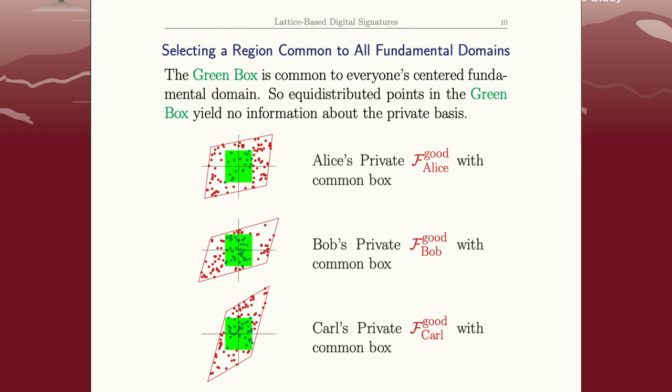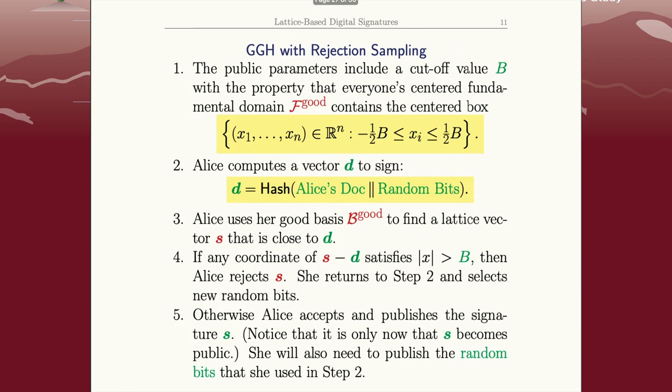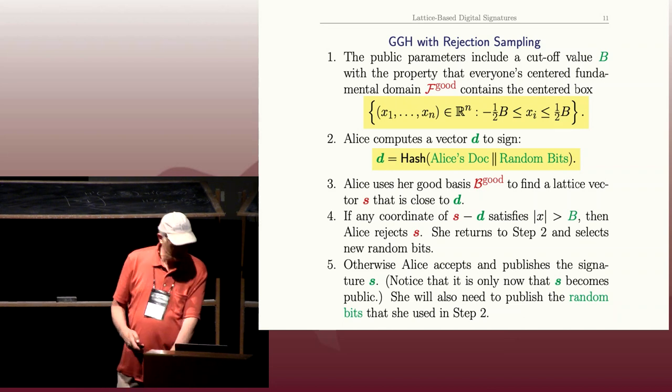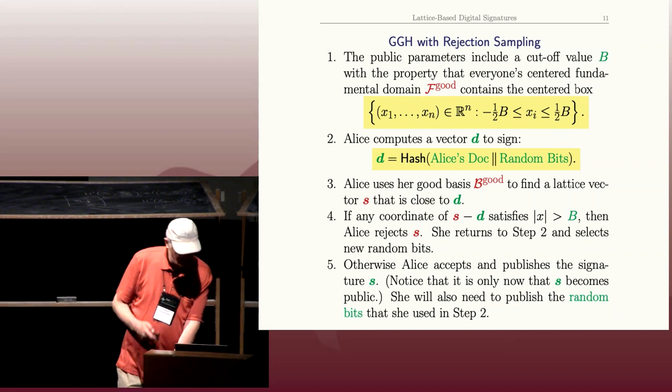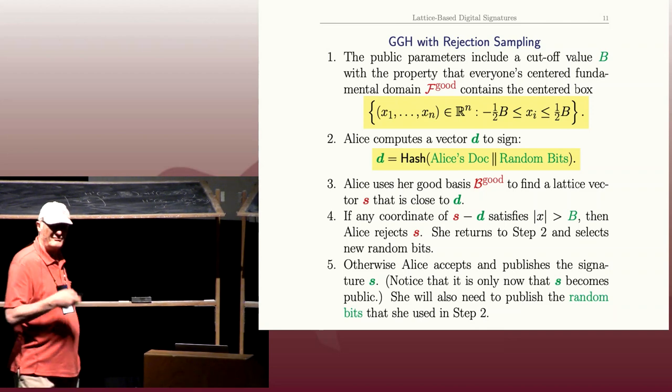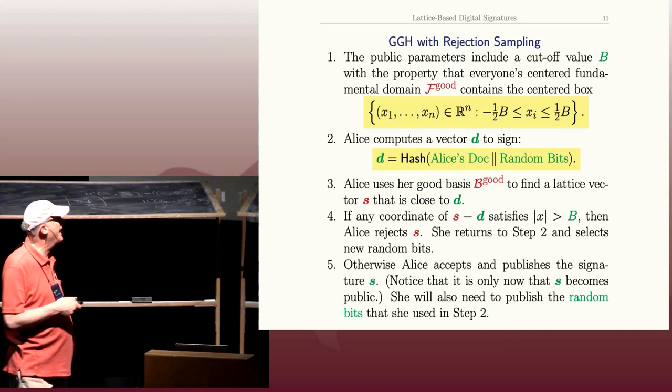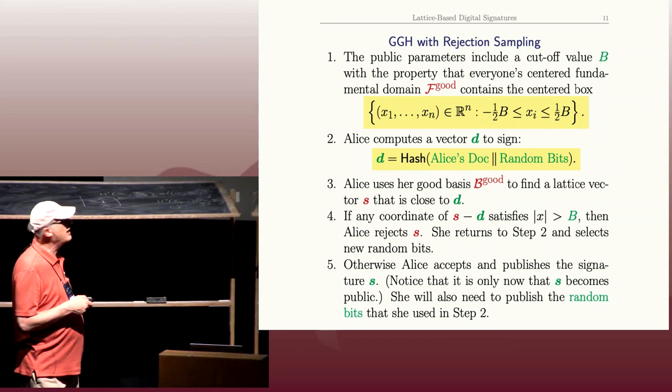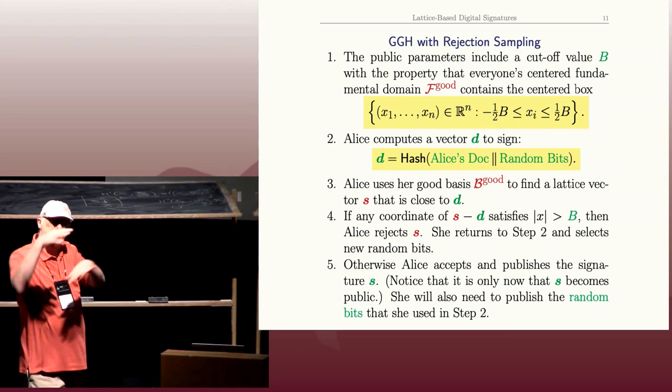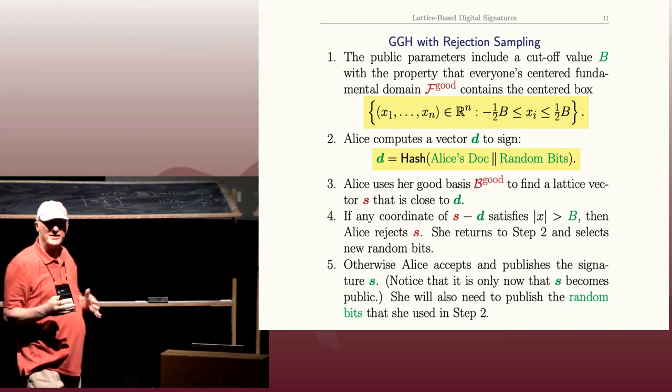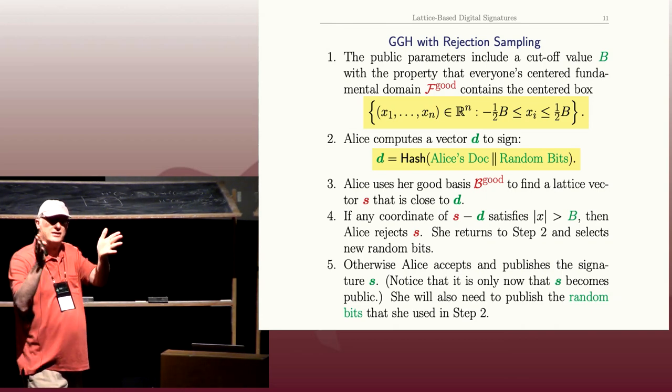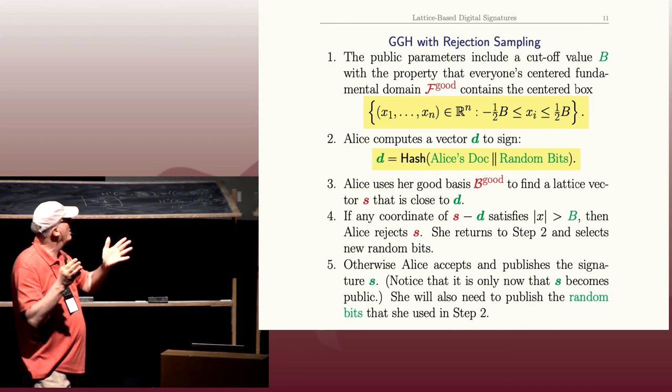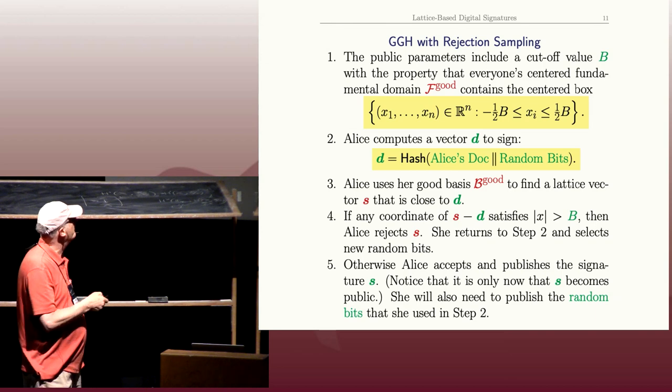All right, now this in principle is what one can do in practice. Let's go through the algorithm quickly. I think the picture conveyed what should happen, but what you do is you choose a cutoff value B—that's the side of the square on the previous slide. You're only going to release signatures that are in a box whose side length is, I guess, two, side length B.